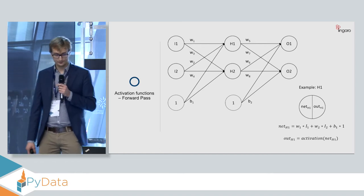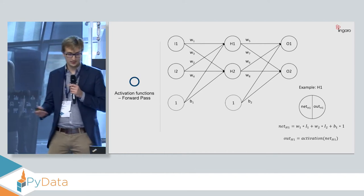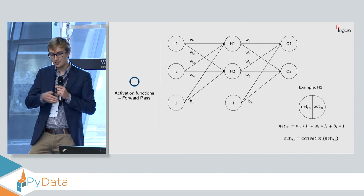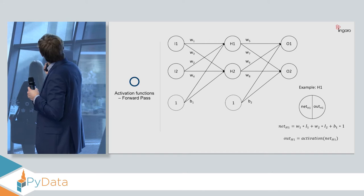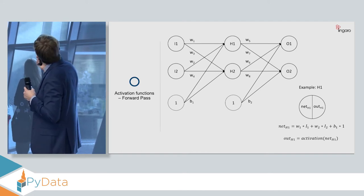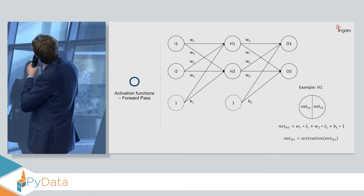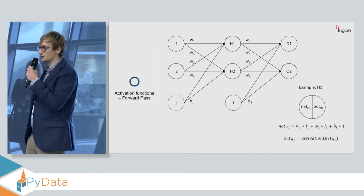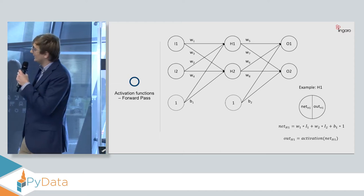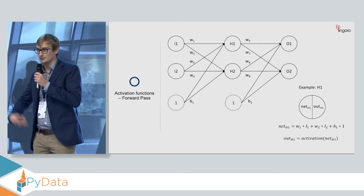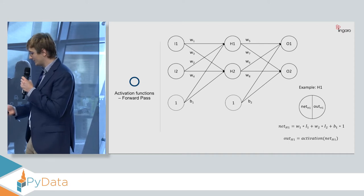So if we focus on a particular neuron, like for example, the H1, the first neuron in the hidden layer, we can see that this is a combination of linear input. So in this case, the net value, so the input to this neuron, is the equation that you can see here. It's a linear combination of the weights and the inputs plus the bias term. Then this is put through an activation function.